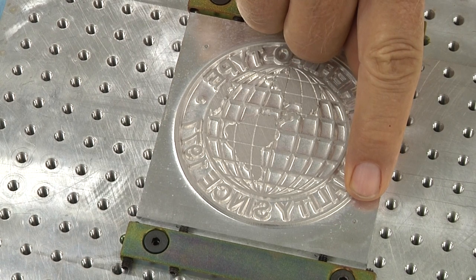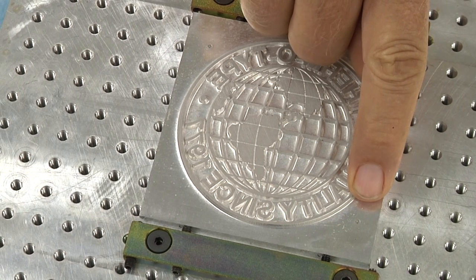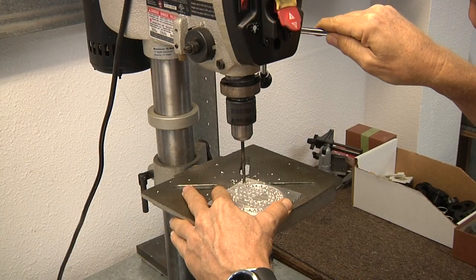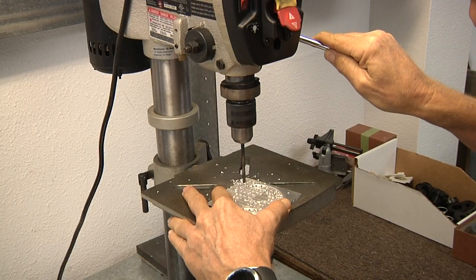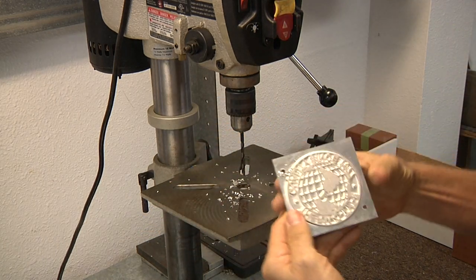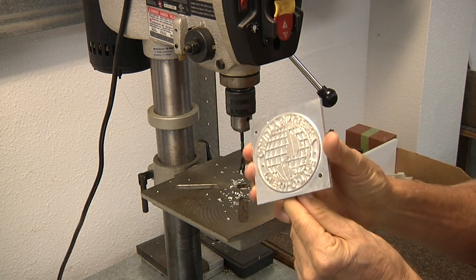If the detents are good, the die can be removed from the chase. Using a drill press and a number 11 drill, holes are carefully drilled to the die using the detents to align the drill bit.